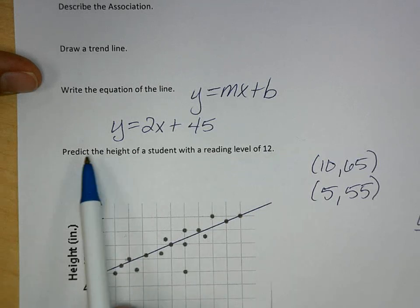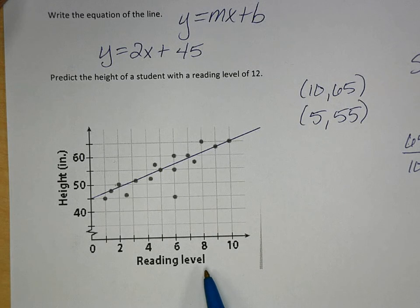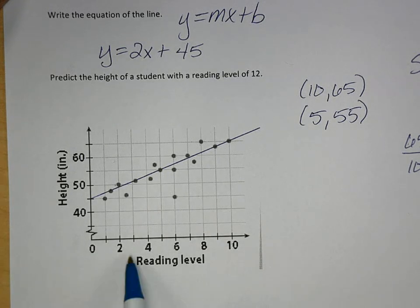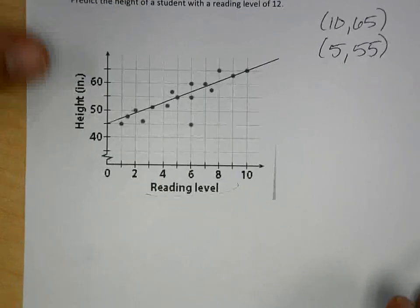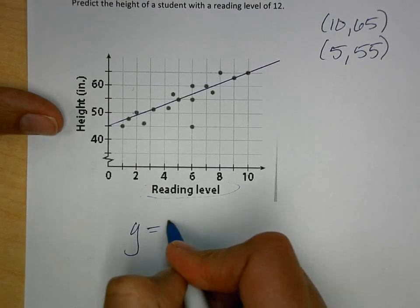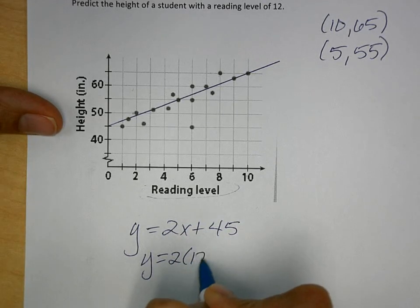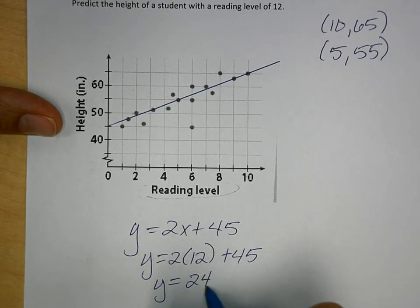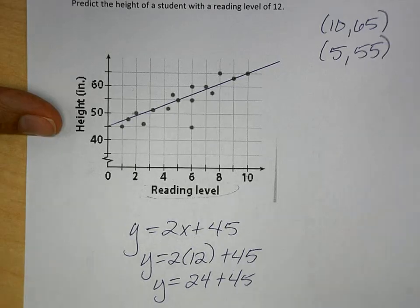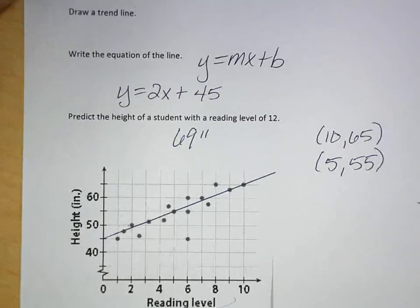The last question asks us to predict the height of a student with a reading level of 12 — that's not on the chart. So we're going to use extrapolation by plugging in 12 for the reading level, which is x, and figuring out what we come up with. If y = 2x + 45, then y = 2(12) + 45, y = 24 + 45, y = 69 inches.